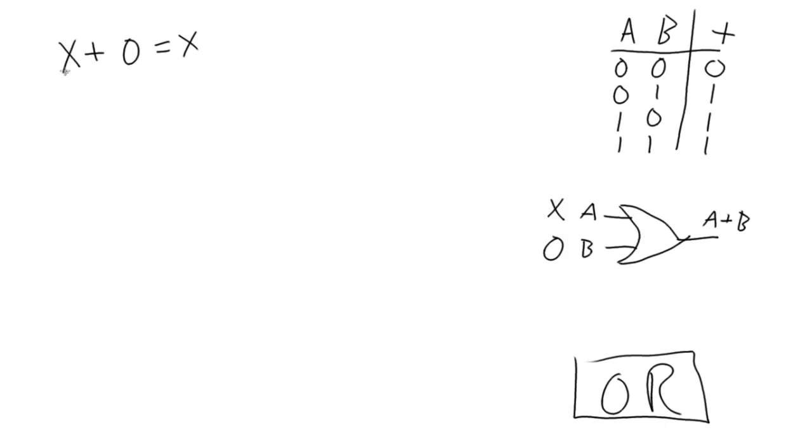And so therefore, X is the only thing that determines the output of our OR gate, and so therefore we can just reduce the statement X OR 0 to just X.